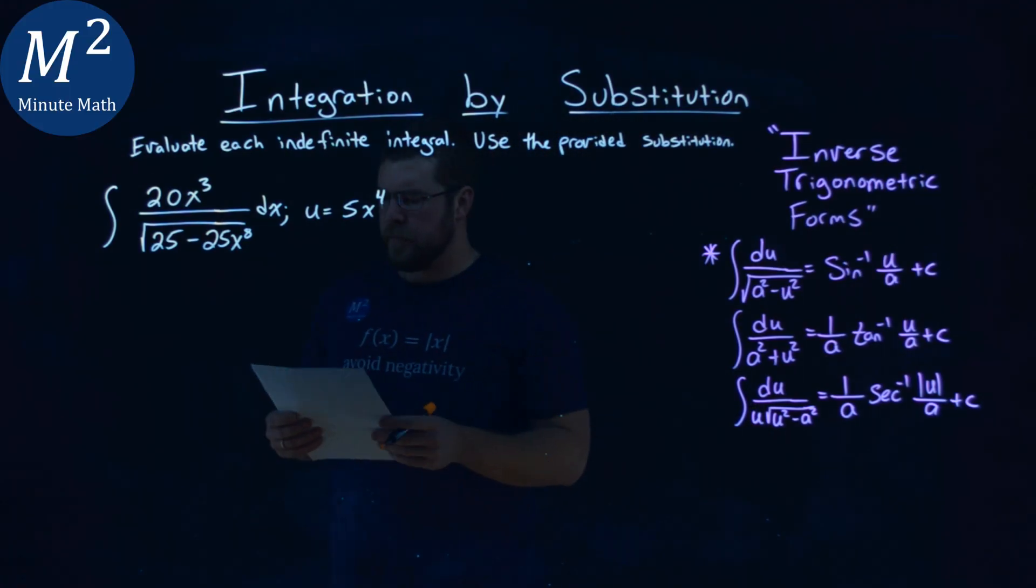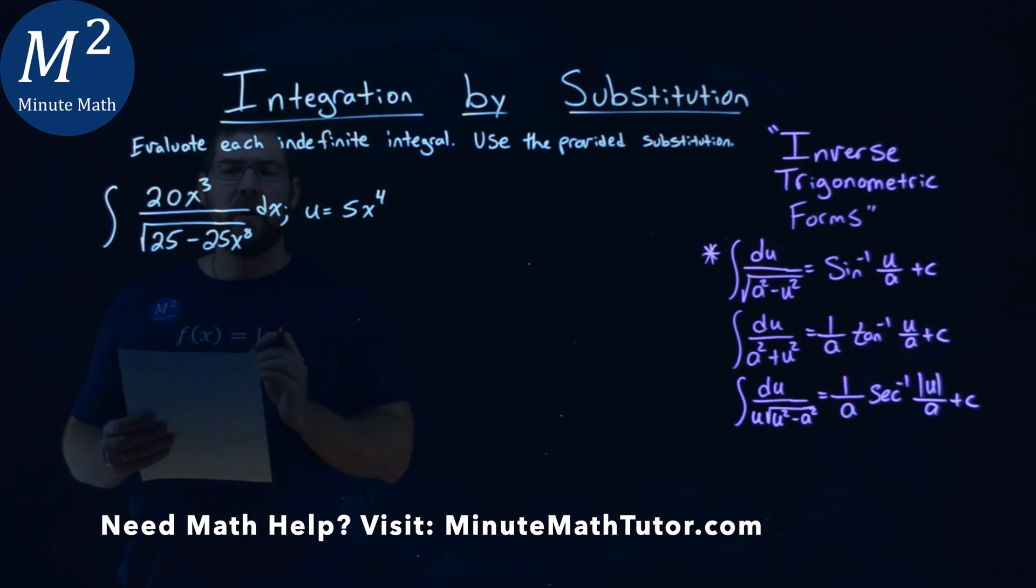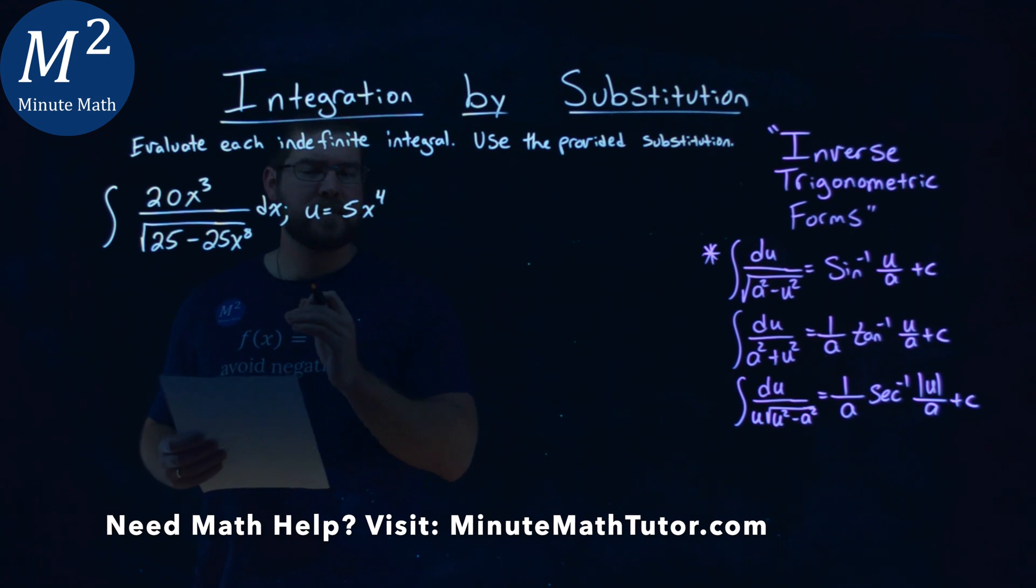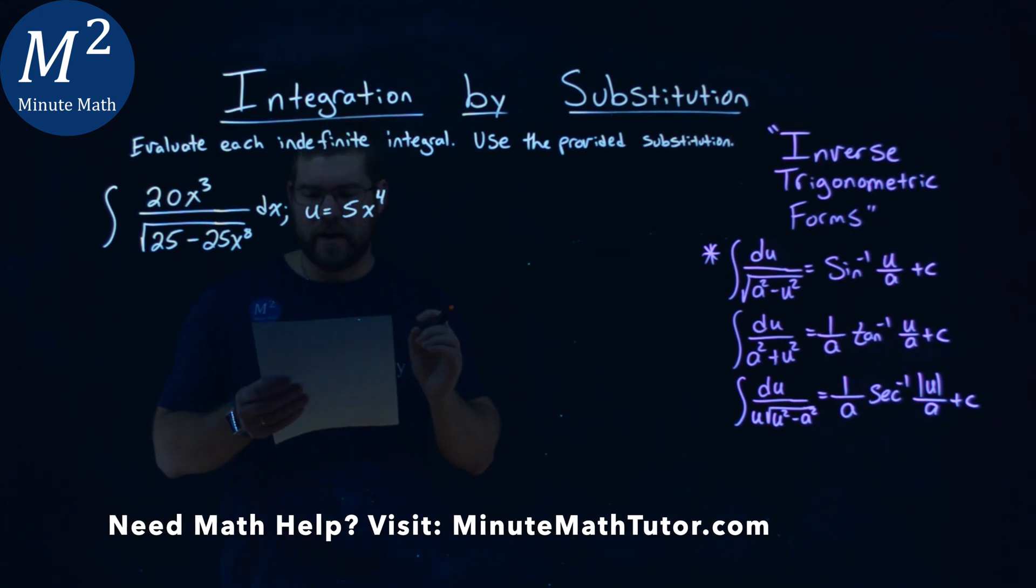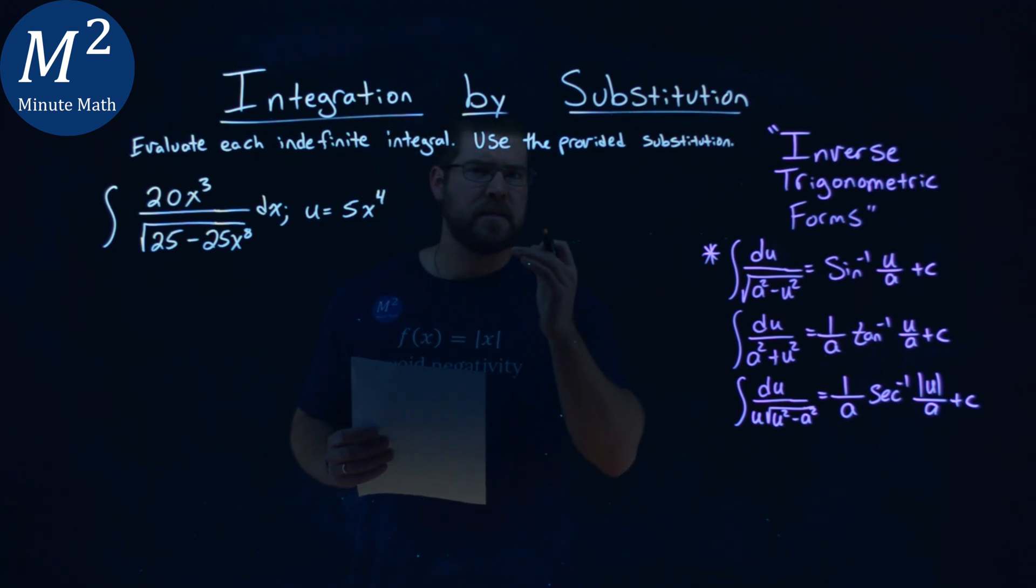We're given this problem right here: the integral of 20x³ over the square root of 25 minus 25x⁸ dx, and we're given a u value of 5x⁴, and we need to evaluate this indefinite integral.